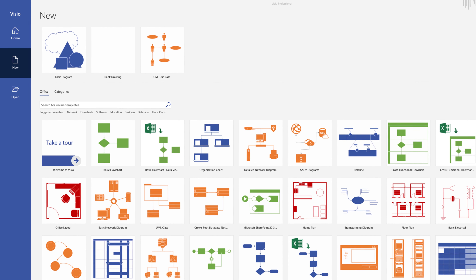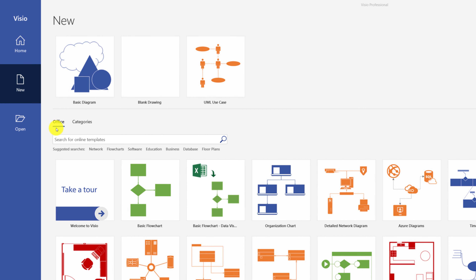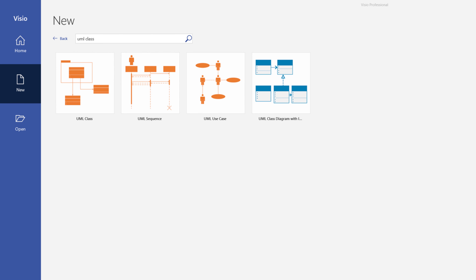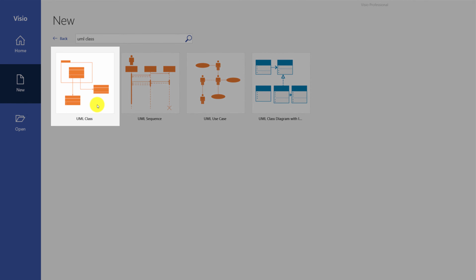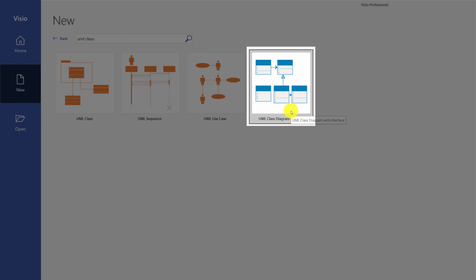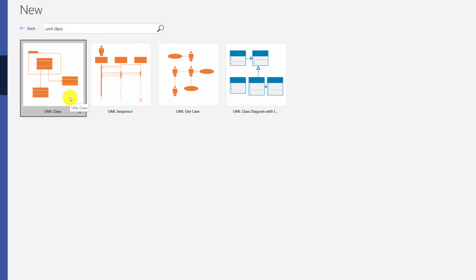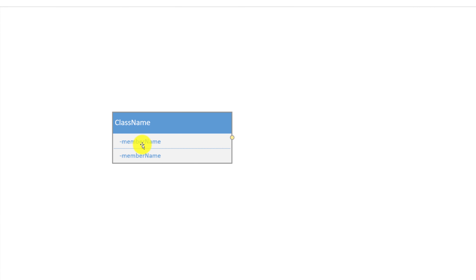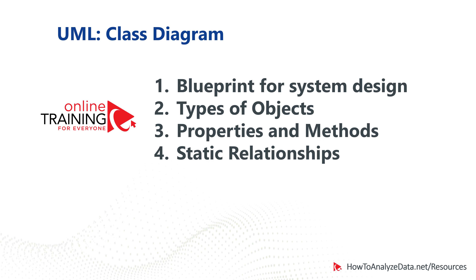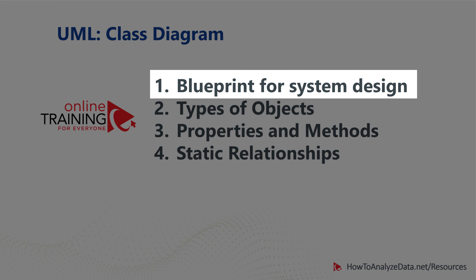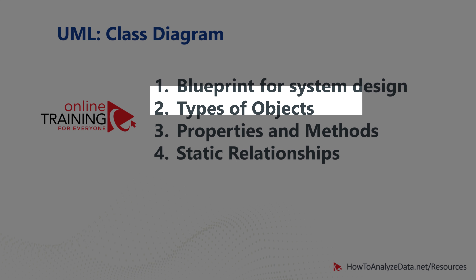The best way to jumpstart a UML class diagram is to use the provided template. Microsoft Visio provides two templates: simple UML class and UML class with interfaces. To start building, bring in a stencil and start populating class members. A UML class diagram provides a blueprint for the entire system design — it works regardless of programming language and shows what types of objects you'll be building, their properties and methods, and static relationships between objects.